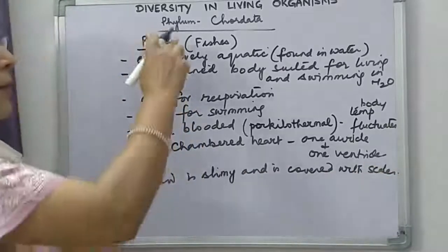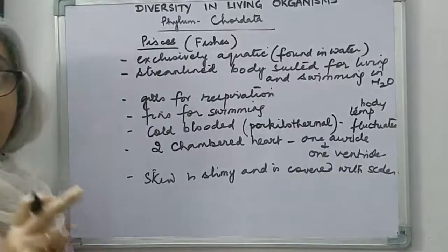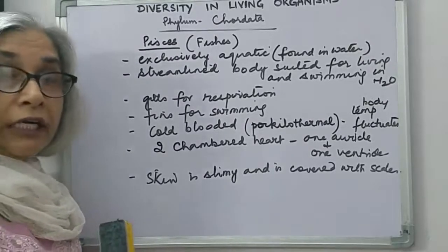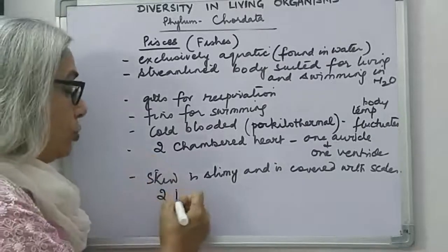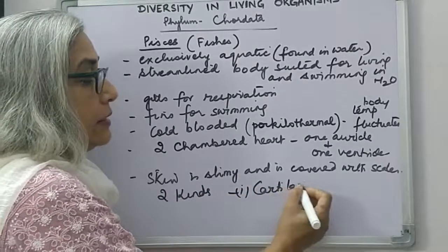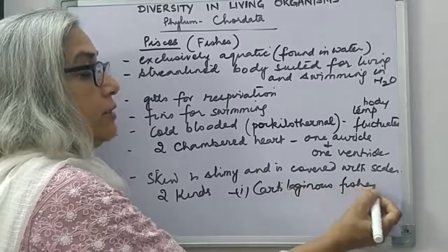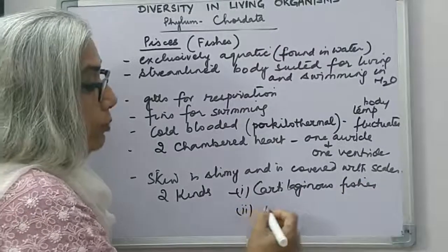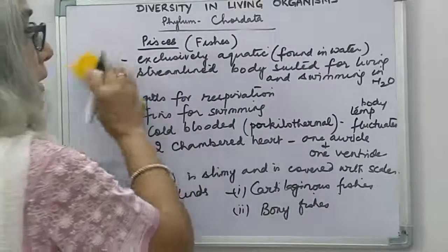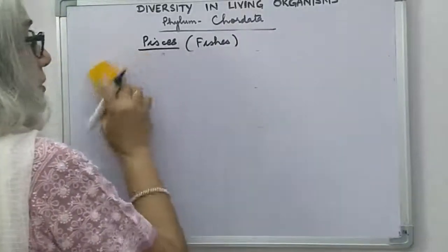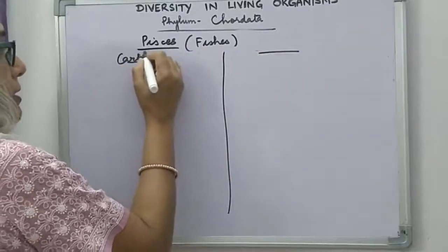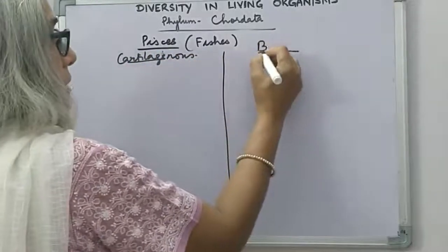Fishes can be of two kinds. One category are called cartilaginous fishes — as the name tells us, their endoskeleton or internal skeleton is made up of cartilage. The other category are called bony fishes, in which the skeleton is made up of bones. Let us divide into two columns and discuss the two kinds of fishes for comparison.